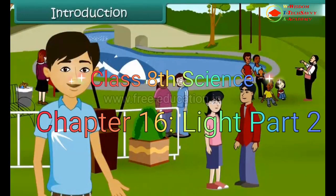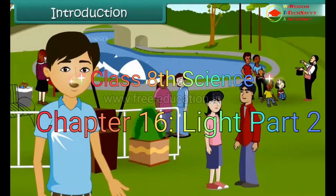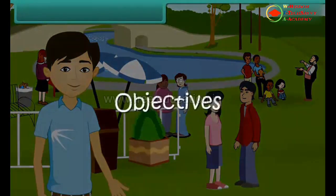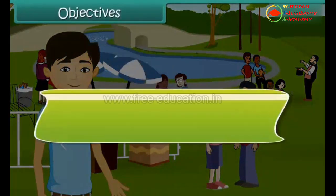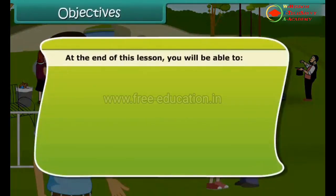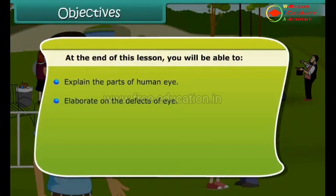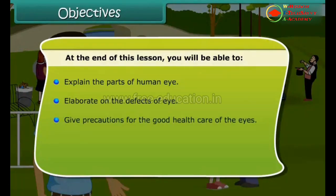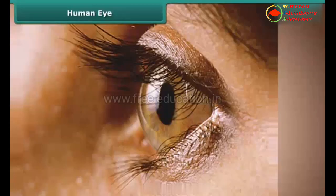Introduction: Vision is our most important sense organ in the human body. Our eyes enable us to see the beautiful world around us. At the end of this lesson, you will be able to explain the parts of the human eye, elaborate on the defects of vision, give precautions for good eye health care, and comment on the Braille system.